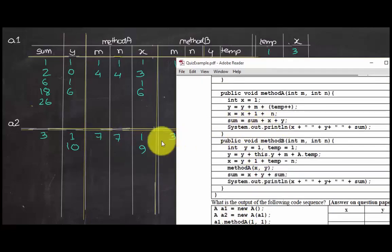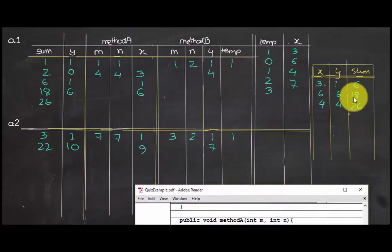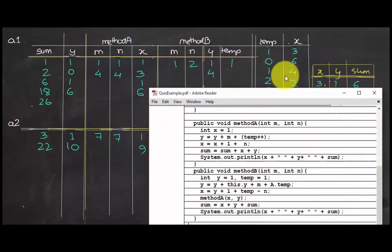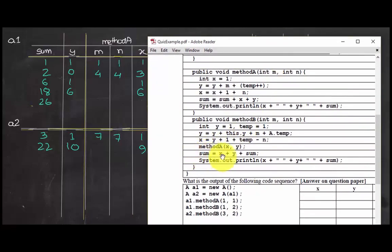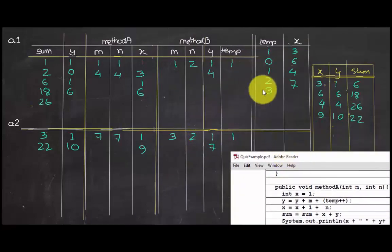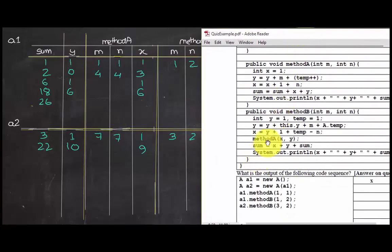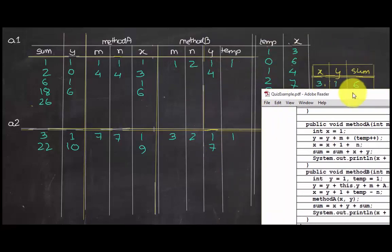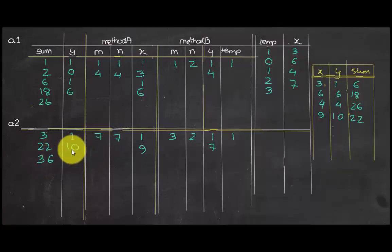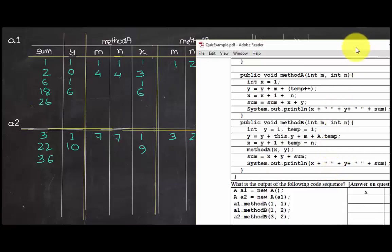Sum equals sum plus x plus y: 9 plus 10 plus 3 equals 22. We print x, y, sum: 9, 10, 22. Back in methodB, sum equals x plus y plus sum. X here is the static x, which is 7. So 7 plus y (7) equals 14, plus sum (22) equals 36. So sum equals 36.